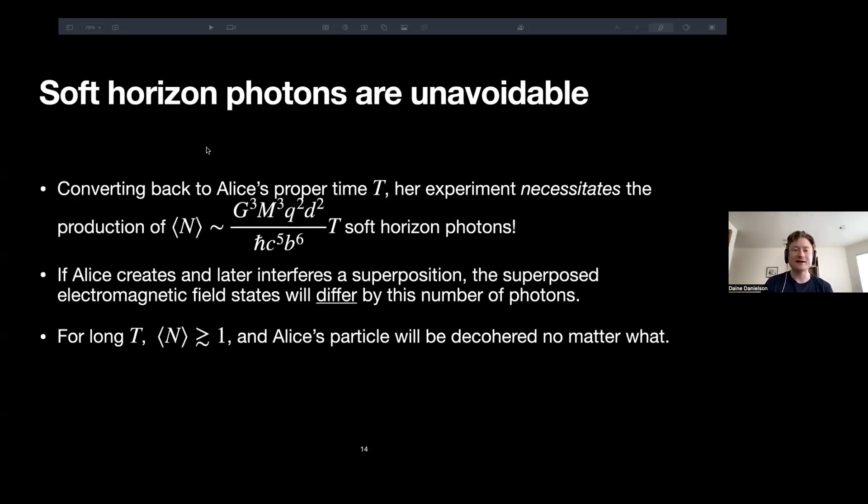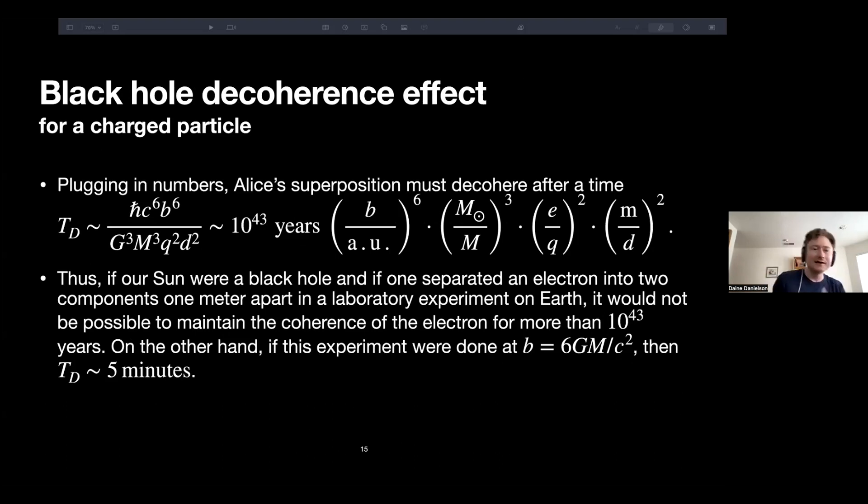So converting back into Alice's proper time, we find that there's a number of soft photons that grows linearly in her proper time over which she maintains the superposition. And so for long T, it'll be unavoidable that although Alice will emit an arbitrarily small amount of energy into the black hole, there'll be an arbitrarily large number of soft horizon photons lost into the interior. And you can plug in numbers for a charged particle.